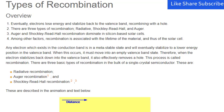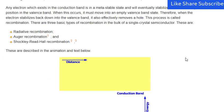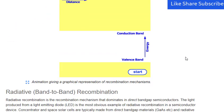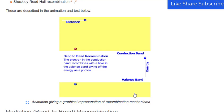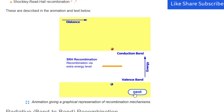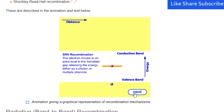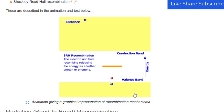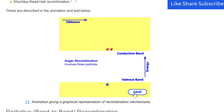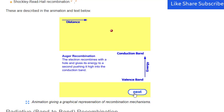Auger and Shockley-Reed-Hall recombination dominate in silicon-based solar cells. Recombination is associated with the lifetime of the material and thus of the solar cell. Any electron which exists in the conduction band is in a meta-stable state and will eventually stabilize to a lower energy position in the valence band. When this occurs, it must move into an empty valence band state, effectively removing a hole. This process is called recombination.